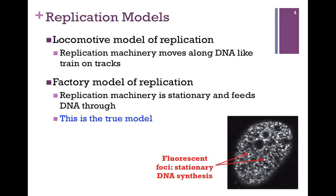We can see that in the electron micrograph in the lower right of our slide. We have a picture of the nucleus. The fluorescent bright spots — the fluorescent foci — are where DNA synthesis is taking place. As you can see, it's within distinct locations within the nucleus, and yet there are multiple locations. If it were the locomotive model, and the machinery moved along the DNA, synthesis would take place throughout the nucleus with no distinct foci. Because there are multiple foci, we know replication occurs at multiple locations.